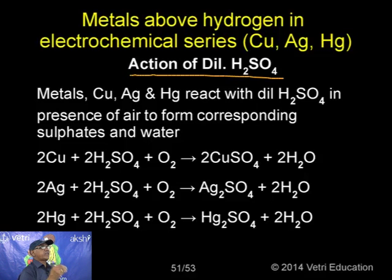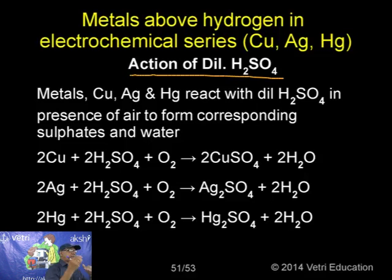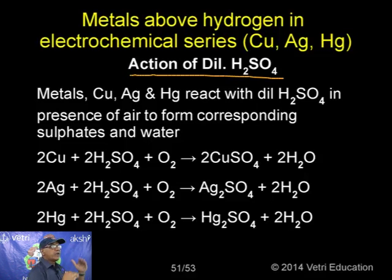Uses of sulphuric acid: it is used in the manufacture of fertilizers; in petroleum industry; in metallurgy; in dyes and dry stuffs; and for the manufacture of many chemical compounds. Both dilute and concentrated sulphuric acid are widely used. I hope you have enjoyed the lecture. Thank you.